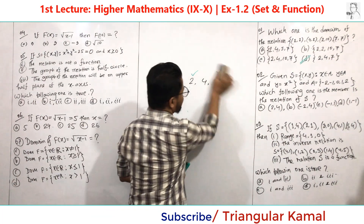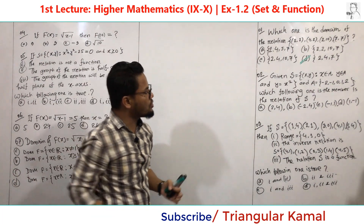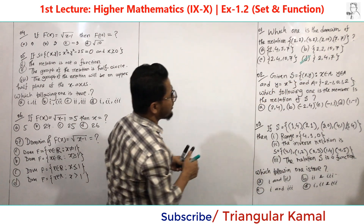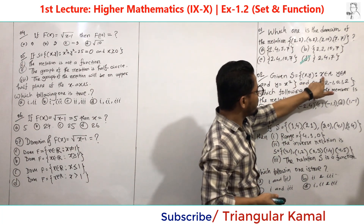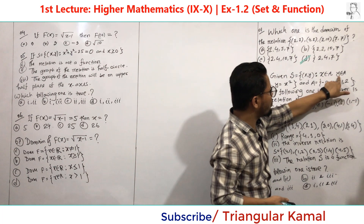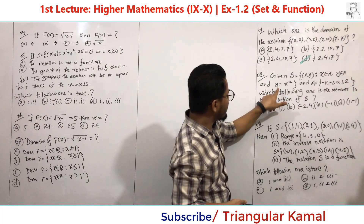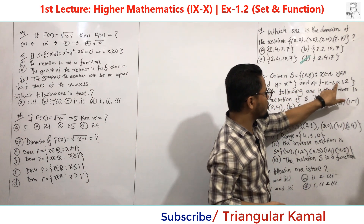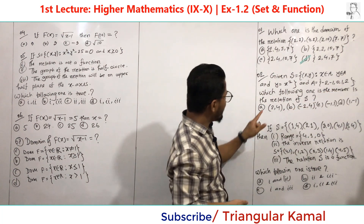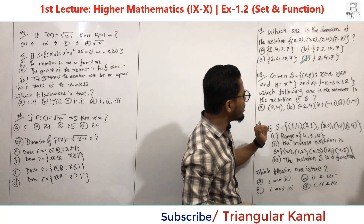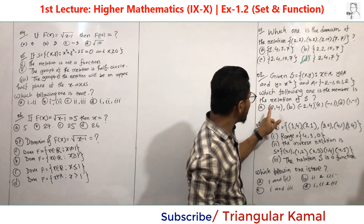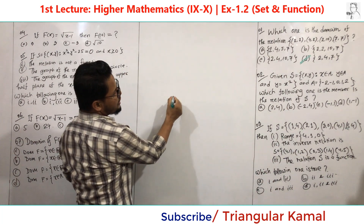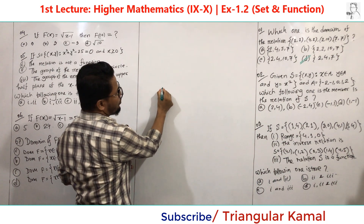Now give attention to number two, one of the most important MCQs — this type usually comes in SSC level exams. The relation S is given as S = {(x,y) : x ∈ A, y ∈ A} with the condition y = x². The elements of A are {-2, -1, 0, 1, 2}. The question asks which of the following is a member of S.